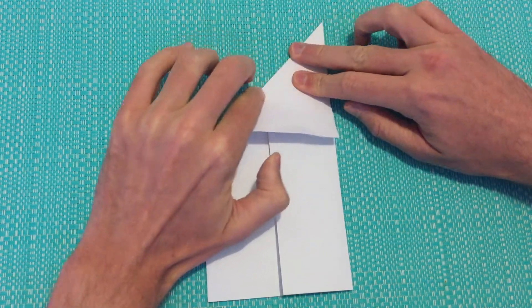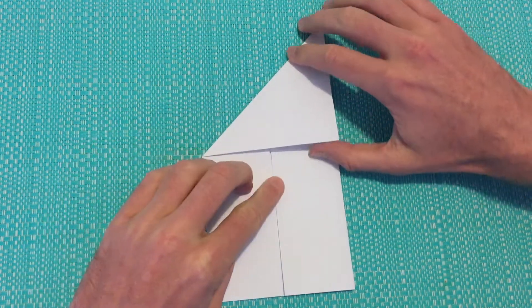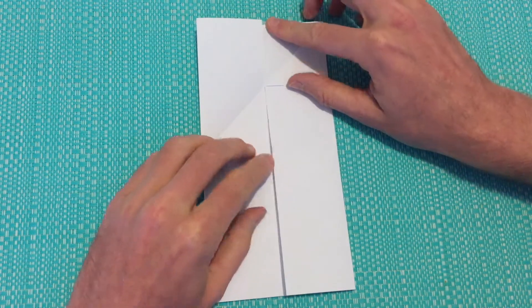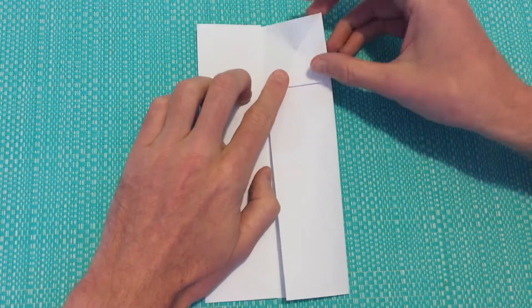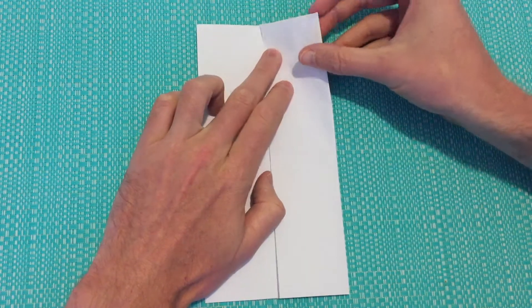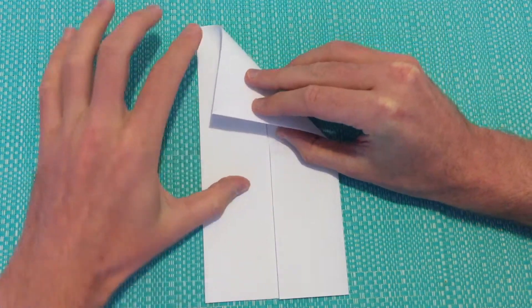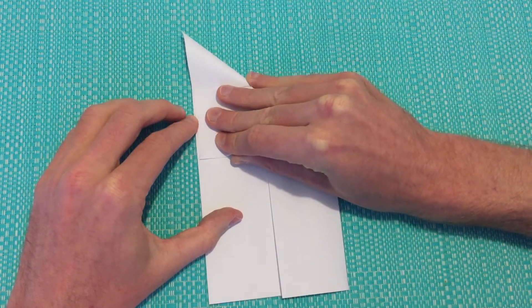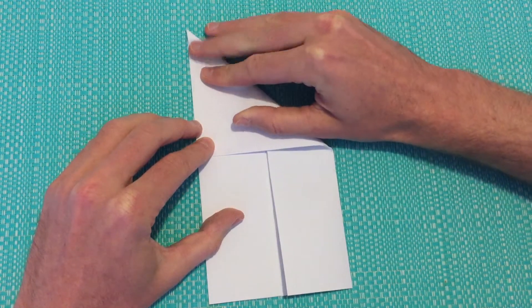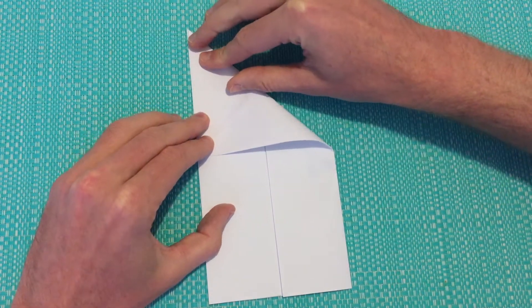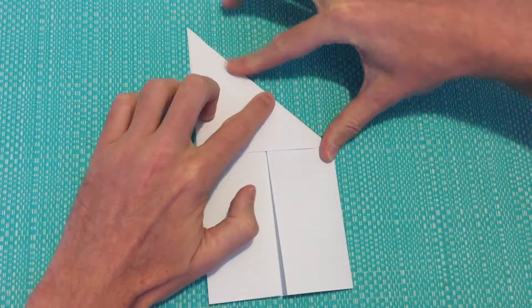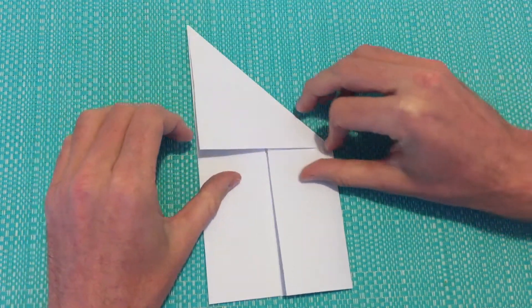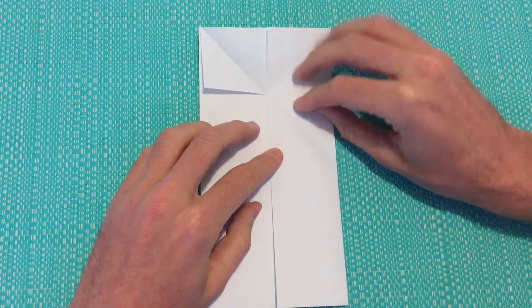We'll create a crease and then we can open that back up and then we'll take our top right corner, we're going to get that top edge to line up with the left-hand edge. Make sure that it lines up the whole way along, create a crease and we can open that back up.